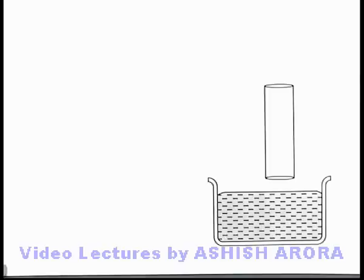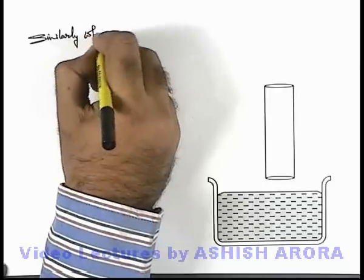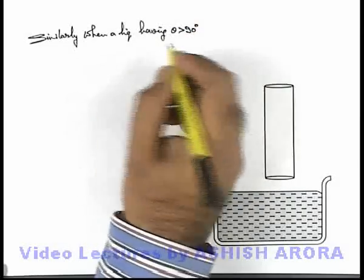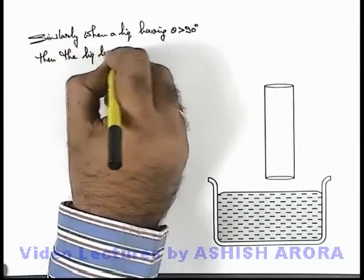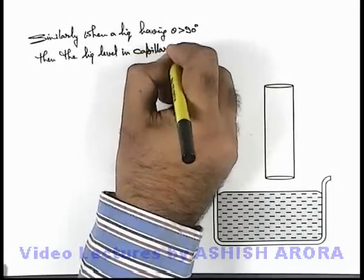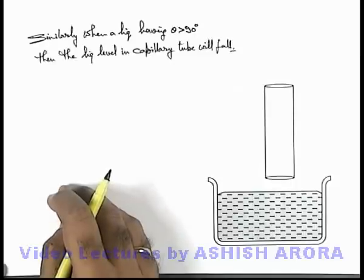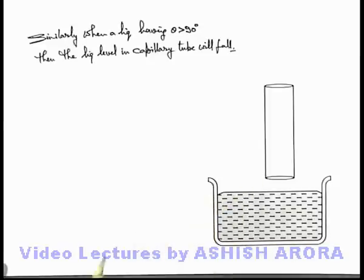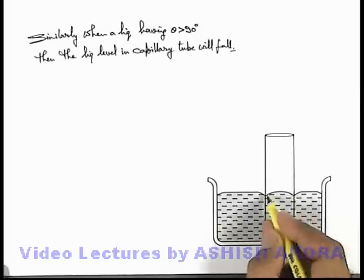Similarly, when a liquid has a contact angle θ greater than 90° with a given solid surface, the liquid level in the capillary tube will fall below the surrounding layer level. In this situation, the contact edges have a convex shape because the angle of contact is more than 90°. As the capillary tube is dipped, a meniscus is formed with a convex surface upward.